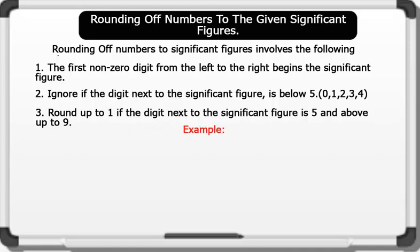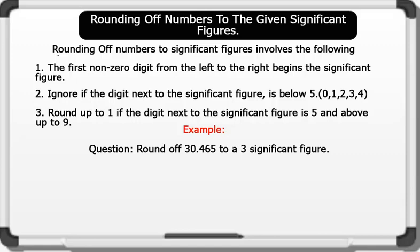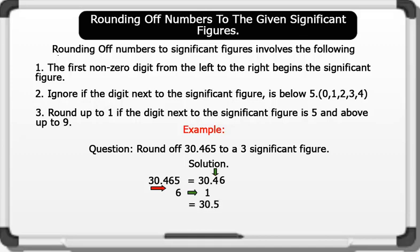Let's see an example. Question: Round off 30.465 to 3 significant figures. Solution: Since we are rounding off to 3 significant figures, we shall consider the fourth figure of 30.465, which is 6. 6 is rounded up to 1 on the number line. 1 is therefore added to the target, which is 4, to make it 5, giving us 30.5. Therefore, 30.465 equals 30.5 in 3 significant figures. That is wonderful.